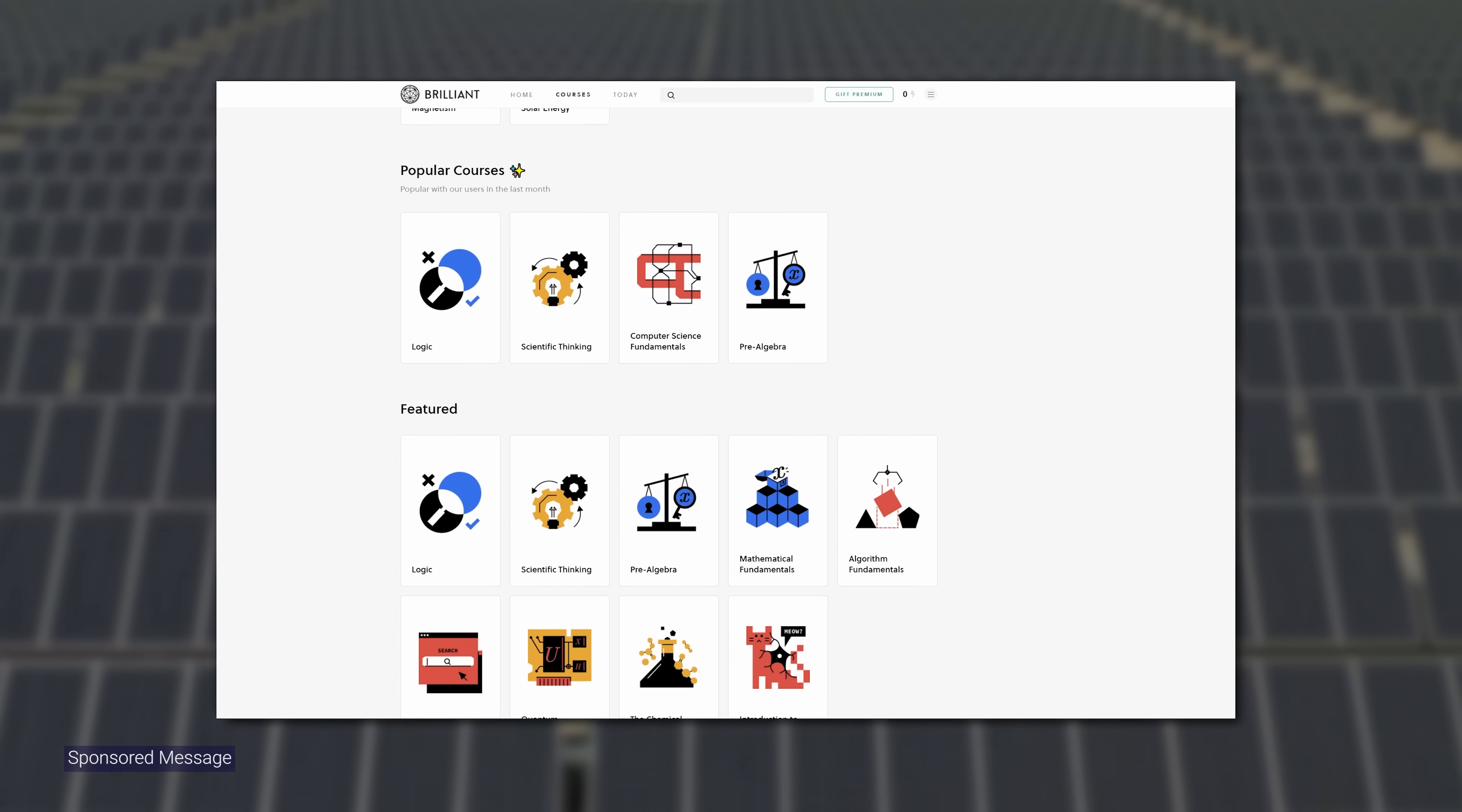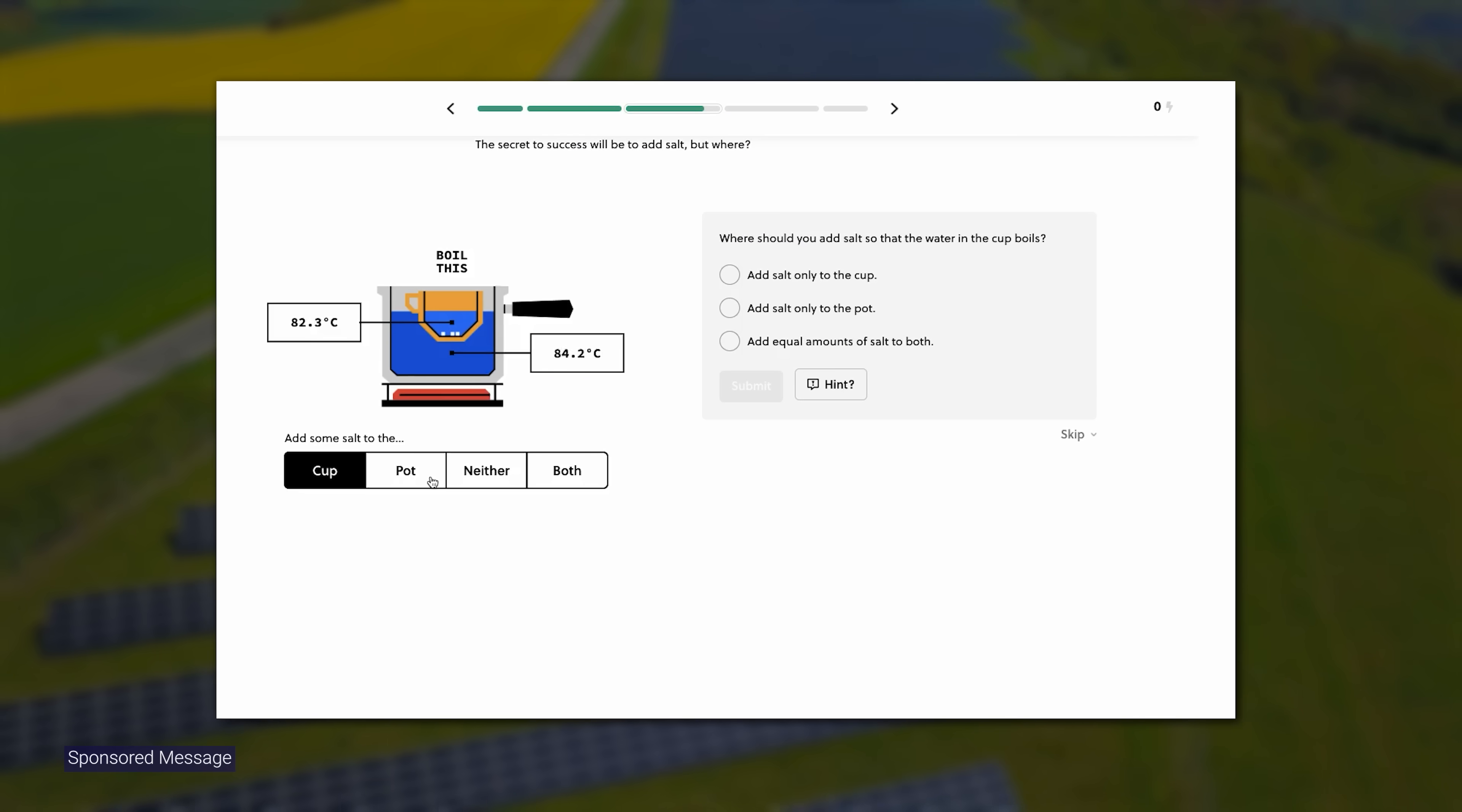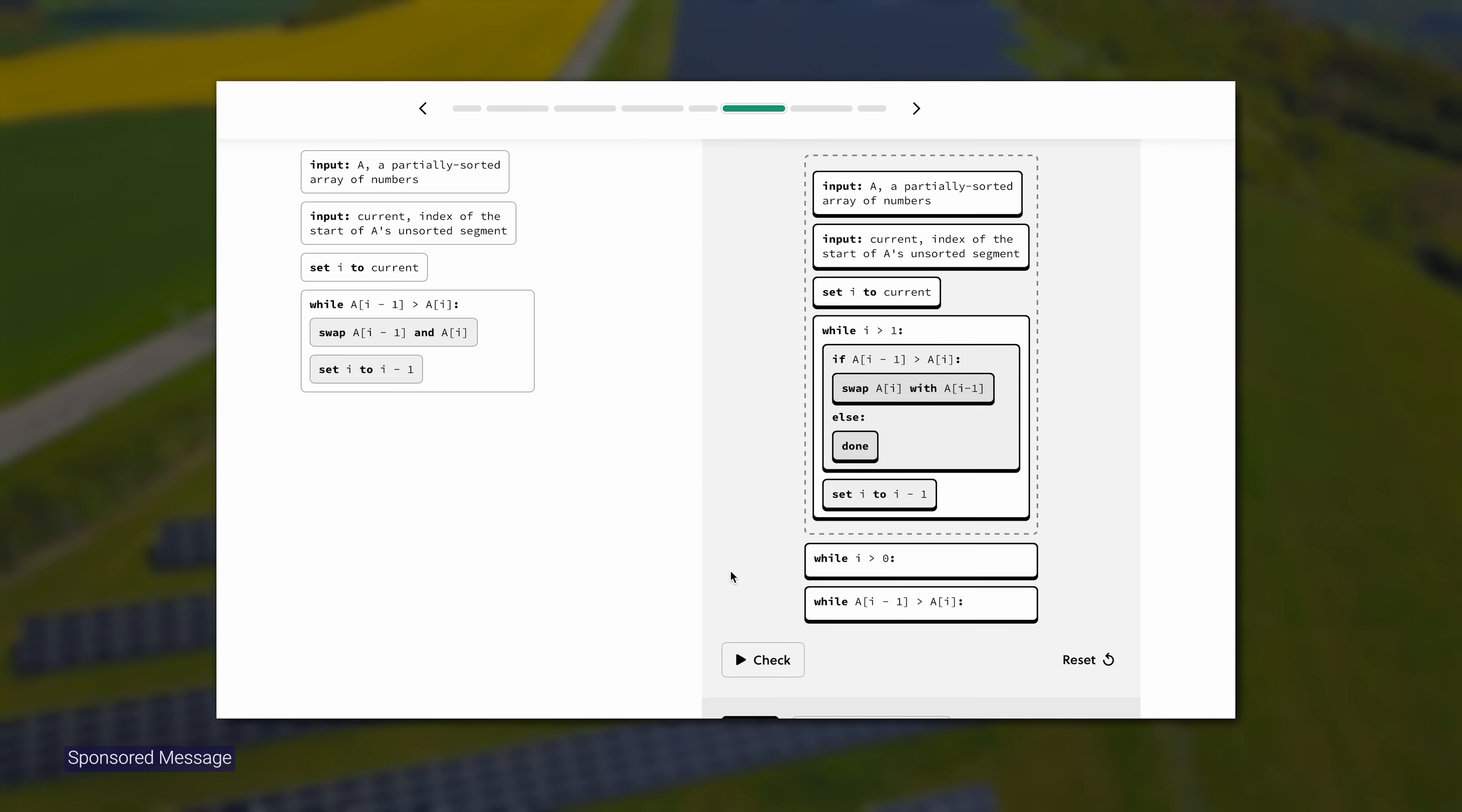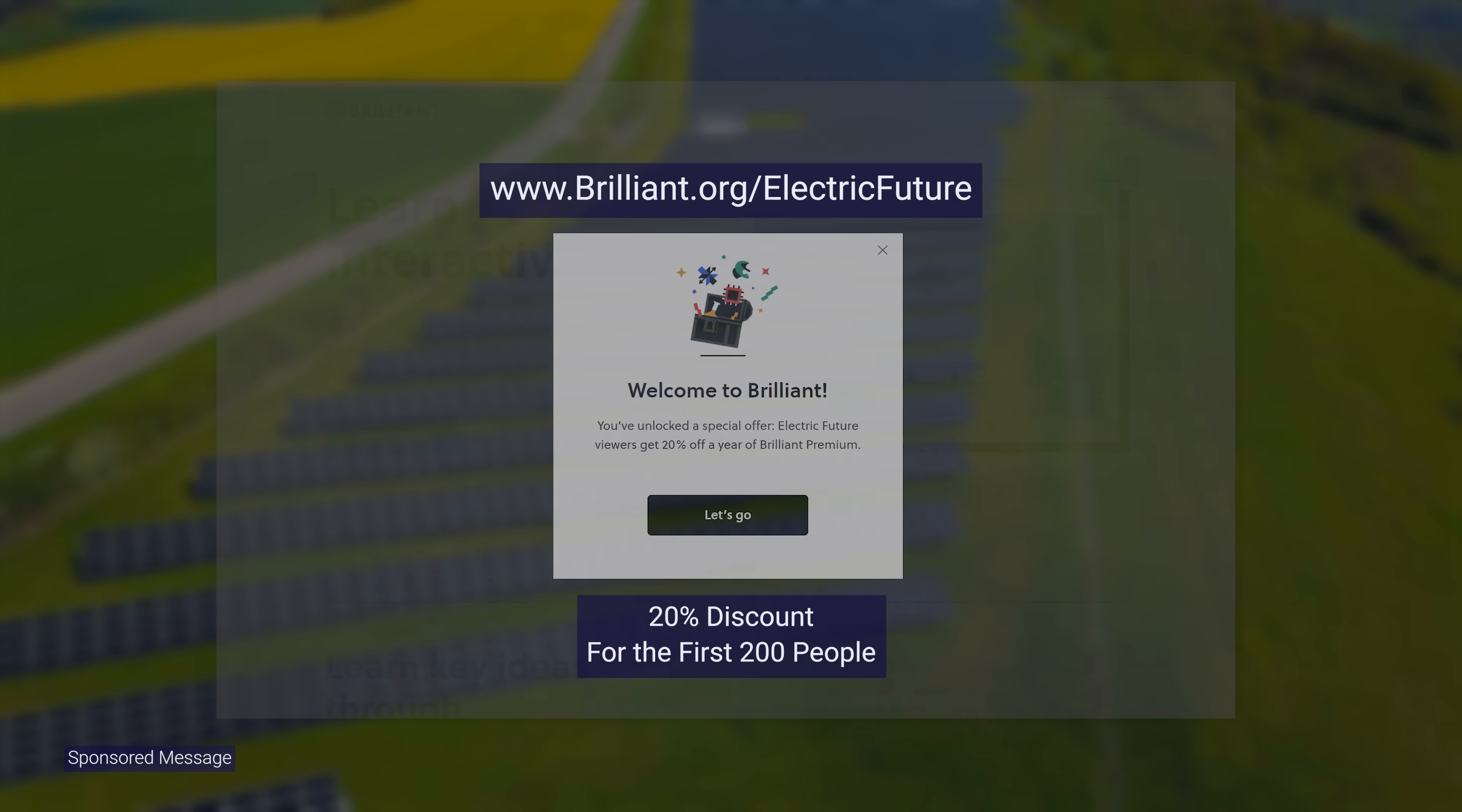Brilliant offers a wide range of other content and topics from mathematical fundamentals to quantitative finance, from scientific thinking to special relativity, from programming with Python to machine learning. Go to brilliant.org slash electric future and sign up for free. And also, the first 200 people to go to that link will get 20% off the annual premium subscription.